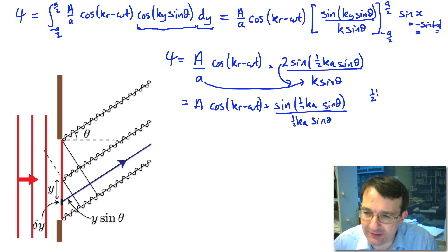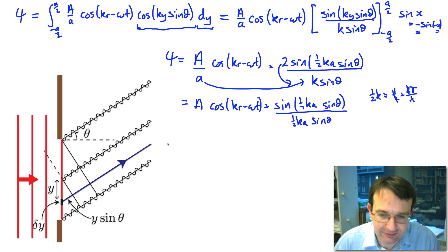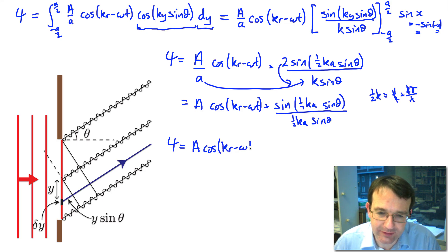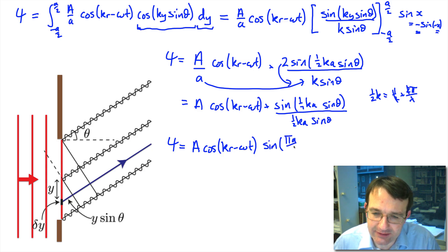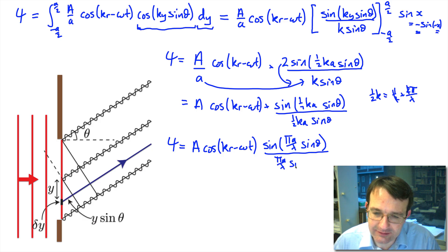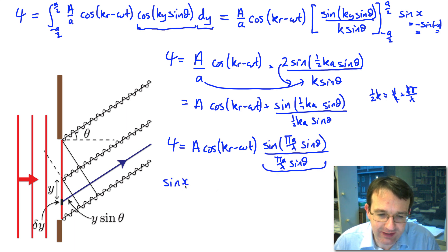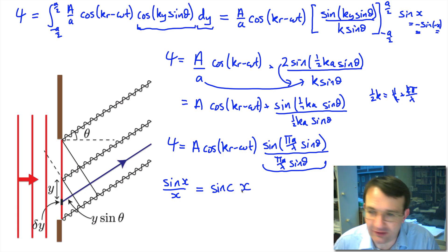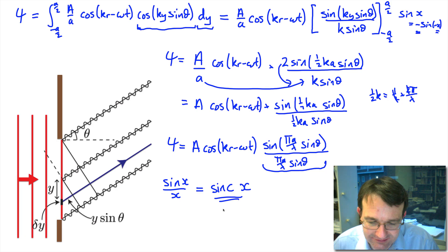Simplifying, noting that k/2 = π/λ so the factors of 2 cancel, we arrive at ψ = A·cos(kr − ωt)·sin(πa sin θ / λ) / (πa sin θ / λ). This is the sinc function — defined as sinc(x) = sin(x)/x — so the wave function from single-slit diffraction is A·cos(kr − ωt)·sinc(πa sin θ / λ).